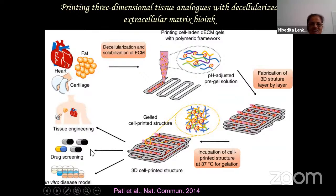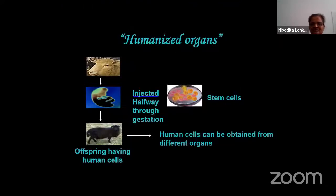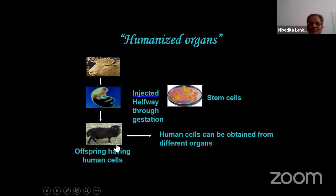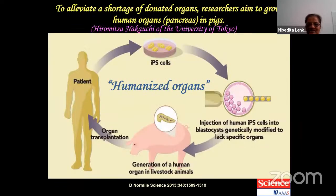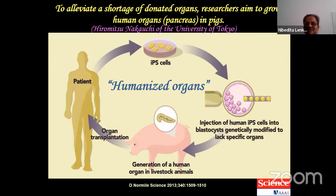Humanized organs: stem cells are injected halfway through gestation in pig or sheep, then offspring will have partly human cells and those organs can be given to humans. The concept is good but many questions remain. The porcine endogenous retrovirus (PERV) is one major bottleneck, though newer strategies are addressing this. The pig heart transplant used gene therapy targeting. Organ transplantation with improved life quality is the strategy - but one needs to think critically about how to evaluate and utilize these approaches for therapy.